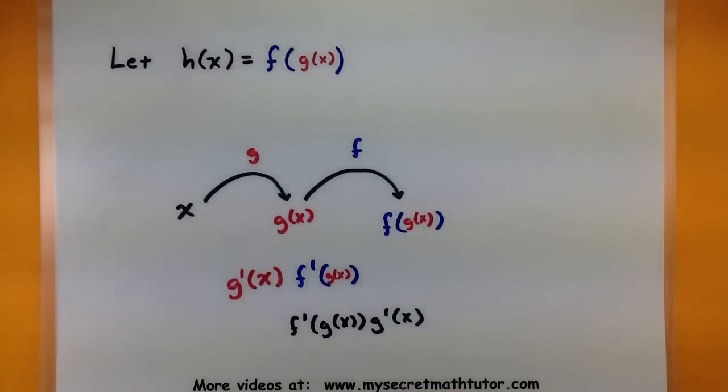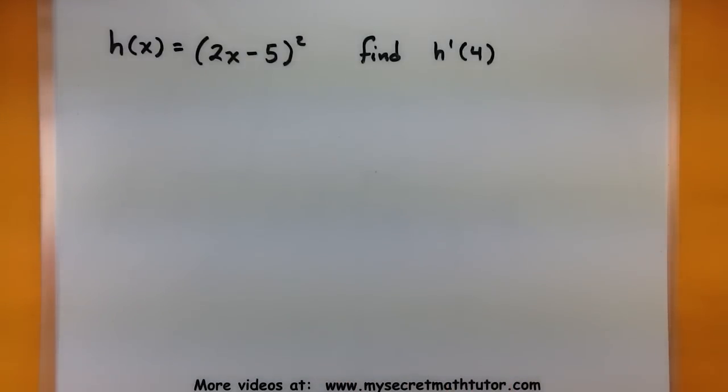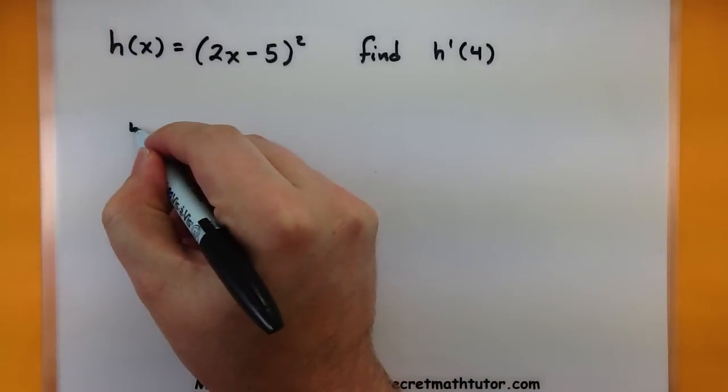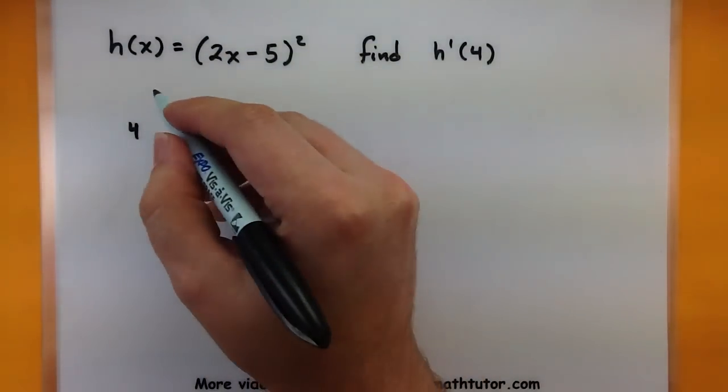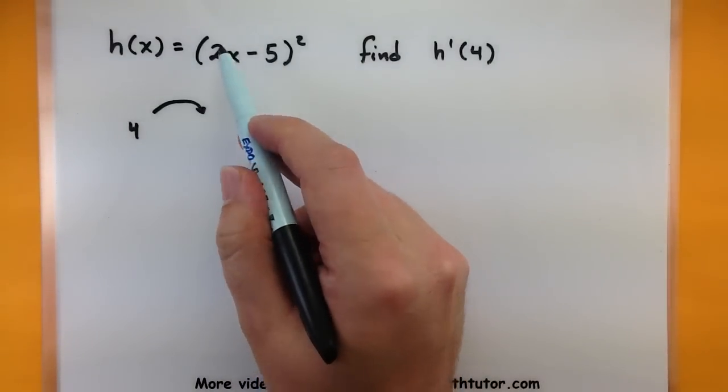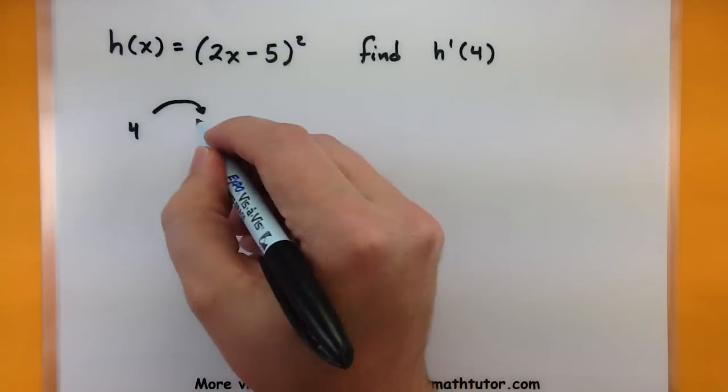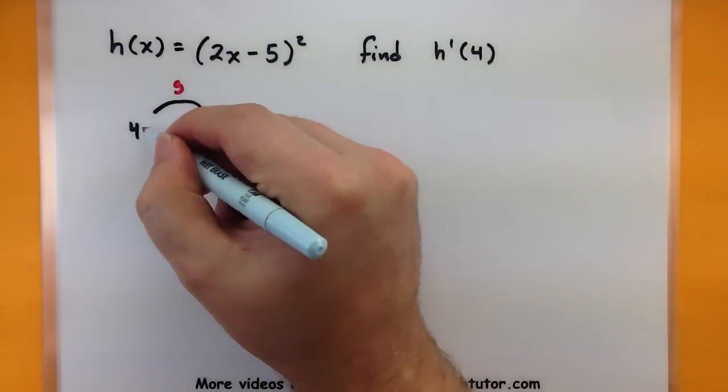So just to convince you that the chain rule really works like it should, let's do a quick example with some actual numbers. In this one, I have a function h(x) = (2x - 5)², and we're interested in finding the derivative of that h at the number 4. So let's first draw a schematic of exactly what's going on here. So imagine taking the number 4 and plugging it into this inside function. Let's call that inside one g. So when 4 gets plugged in here, I'd have 2 times 4, that'd be 8, minus 5, and that would be a 3. So I know that my inner function g takes it from 4 to 3.